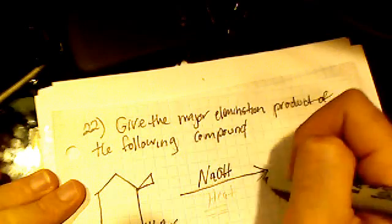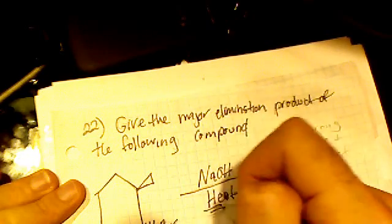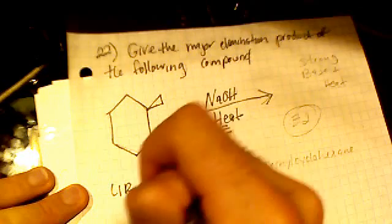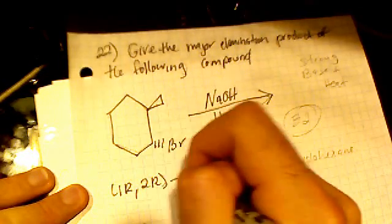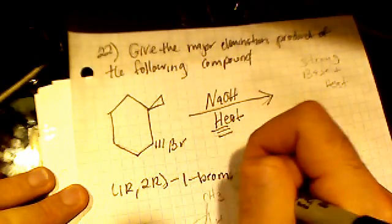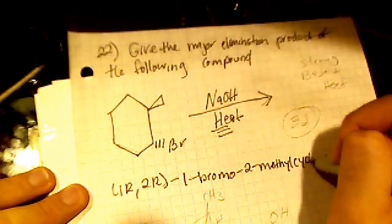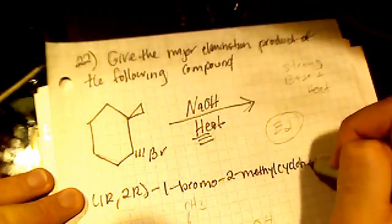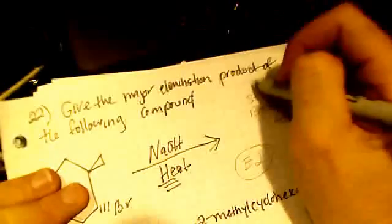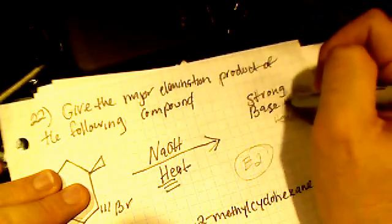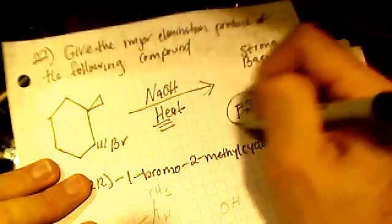So it's being treated with sodium hydroxide in heat. The compound is 1R, 2R, 1-bromo-2-methylcyclohexane. It's a strong base plus heat, which is going to give us an E2 elimination, right?